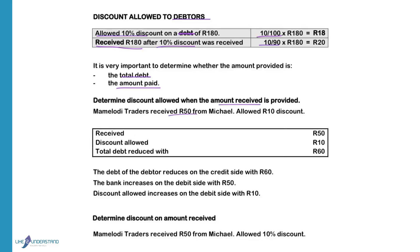We receive R50, and we allow R10 discount. In addition to the R50 paid, we will also reduce his account with the R10, so the total debt of Michael will be reduced by R60. The debtor's account reduces on the credit side with R60. Bank will increase on the debit side with R50, the amount paid into the bank. Discount allowed is the expense that will increase on the debit side with R10.